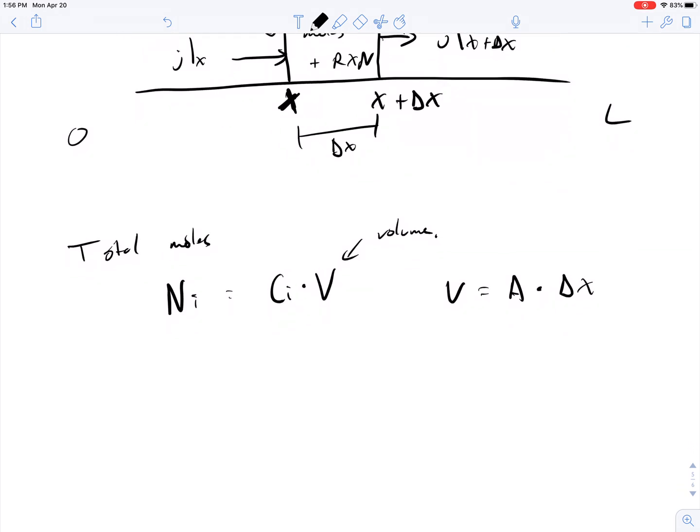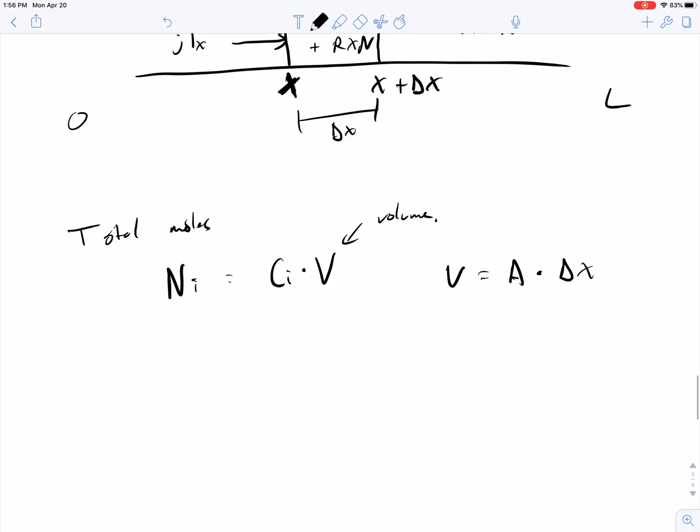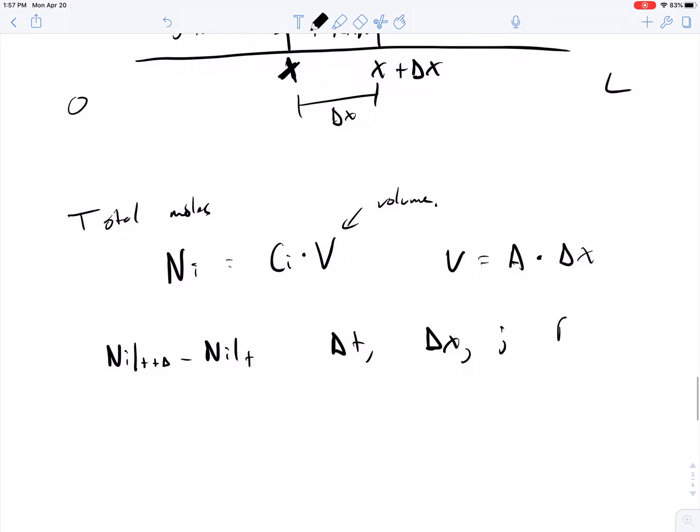So now we're going to do this accumulation balance equation on this overall system. And what we're interested in is the total number of moles at some time point in the future minus the number of moles at some previous time point. And this is going to depend on the time interval, the spatial interval, the value of J, the flux, the reaction rate that could be taking place in there, and the area.